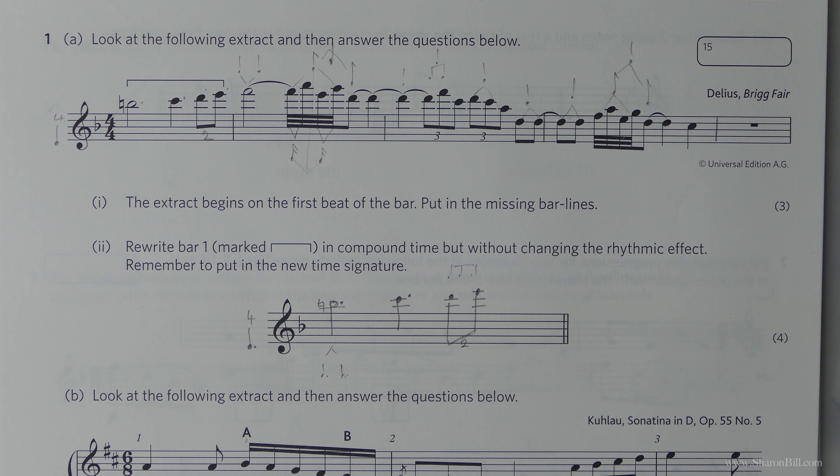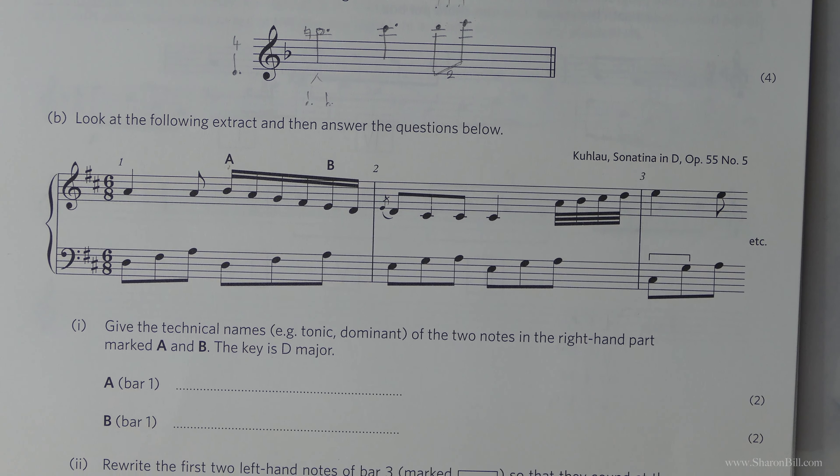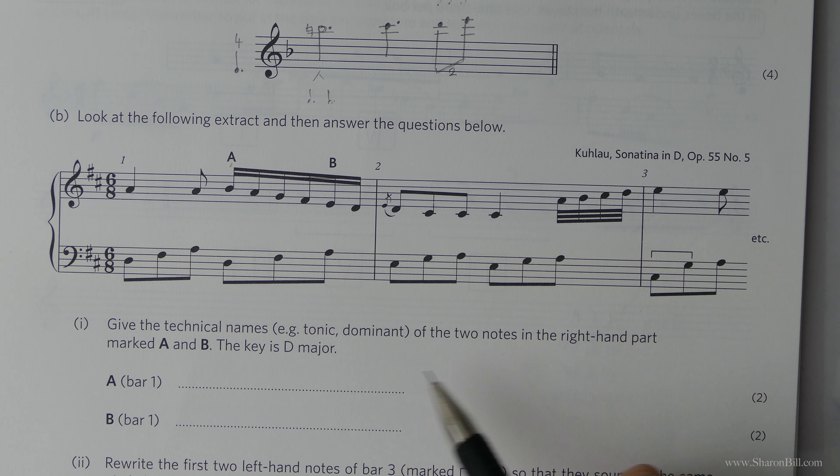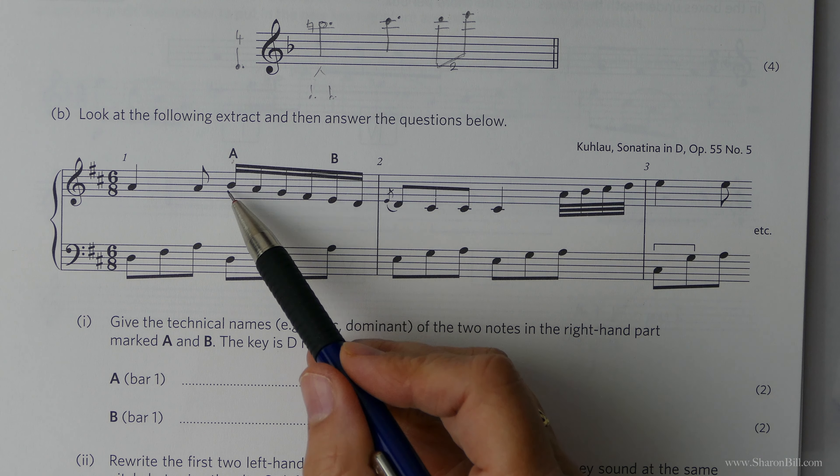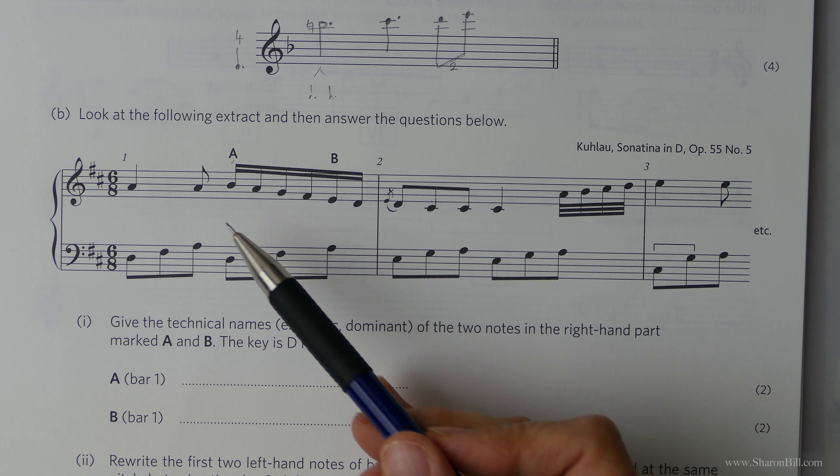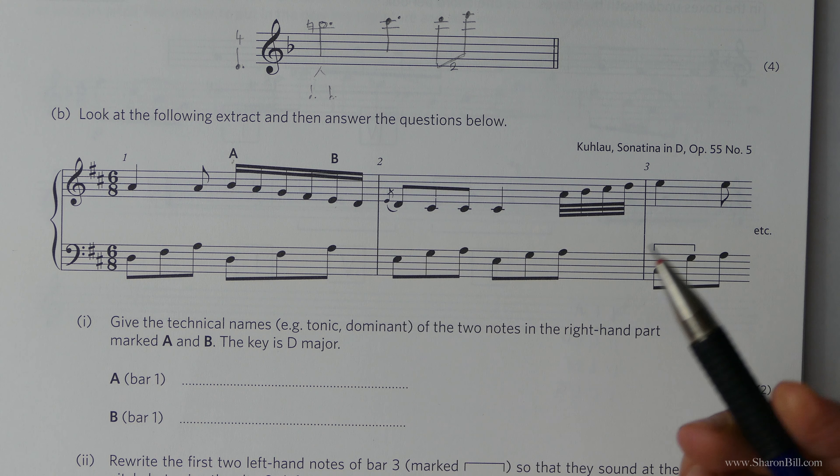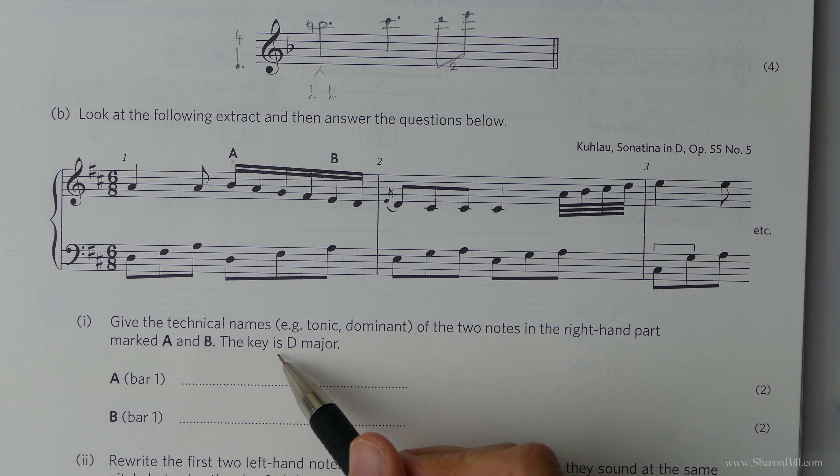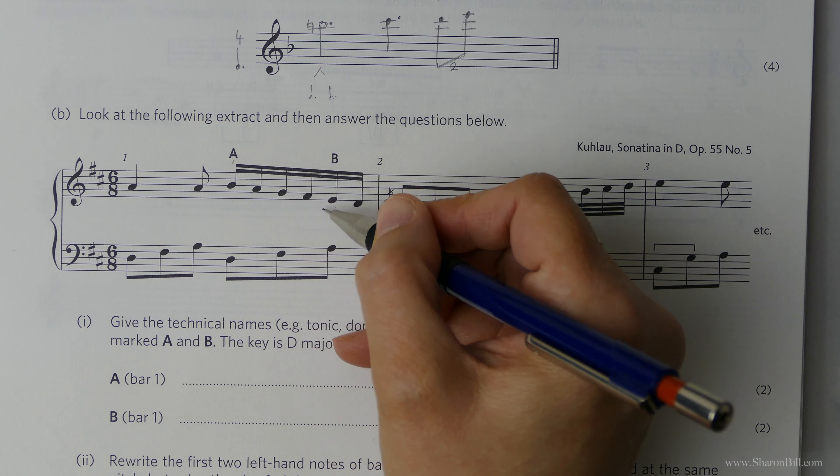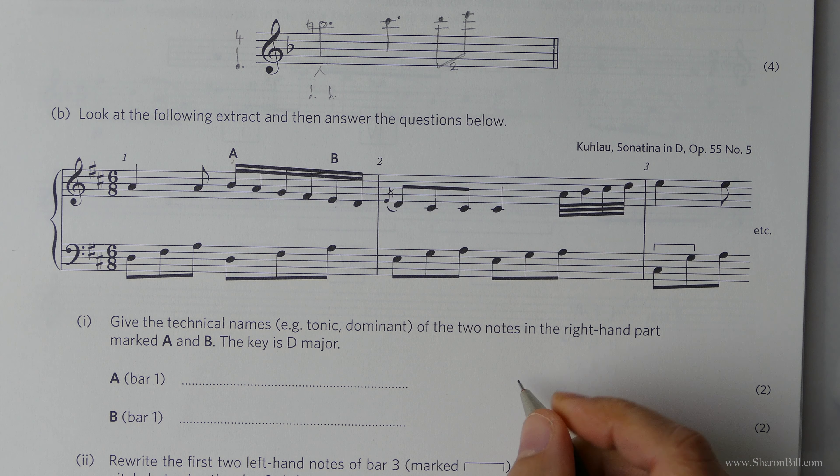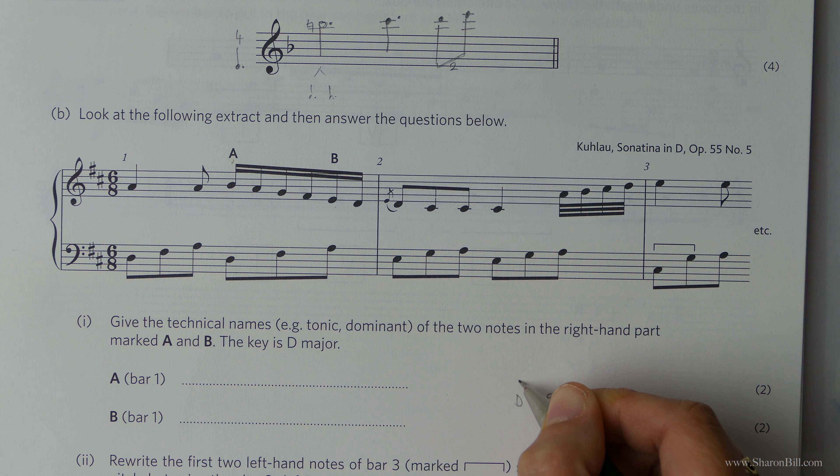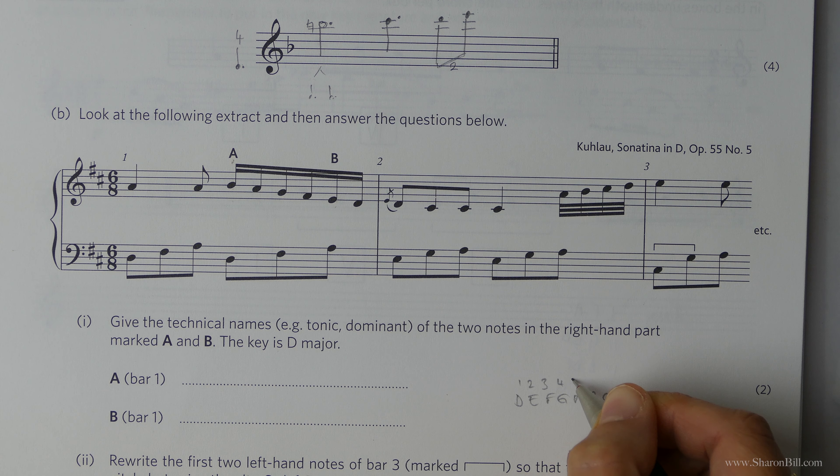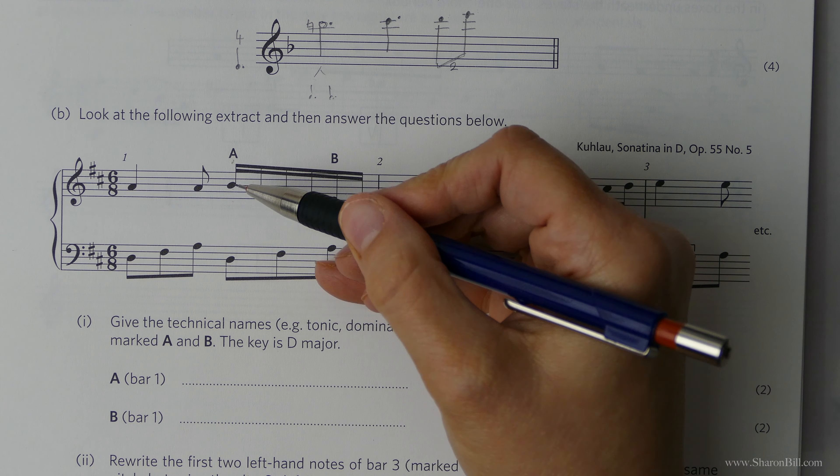Let's press on. So now, part B, we're referring to this little extract here. We're asked to give the technical names of A and B notes. A and B in the right hand part. We're told that the key is D major, so they've helpfully done that bit of thinking for us. So we can either count up your intervals from here, from a D counting upwards, or you can double check yourself by just writing out the notes of the scale here, or on your scrap paper in the exam, of course.